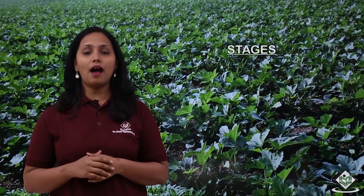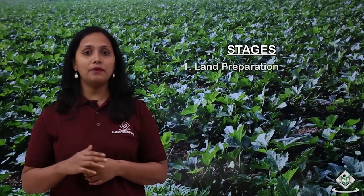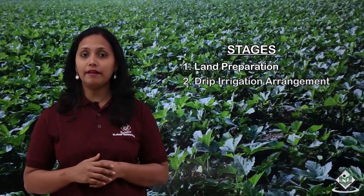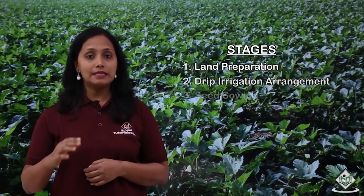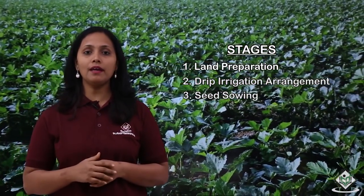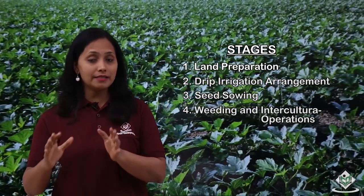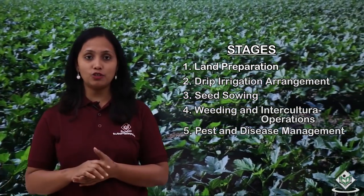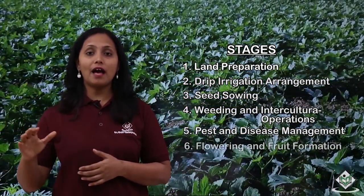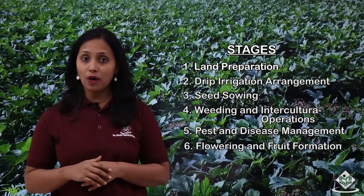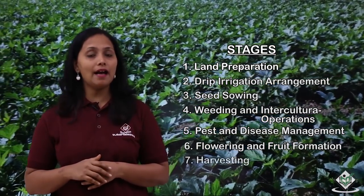The stages involved in the cultivation process of Okra crop are: land preparation, drip irrigation arrangement, seed sowing, weeding and intercultural operations, pest and disease management, flowering and fruit formation, and harvesting.